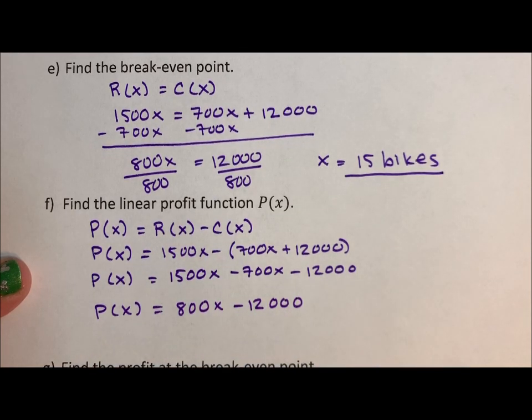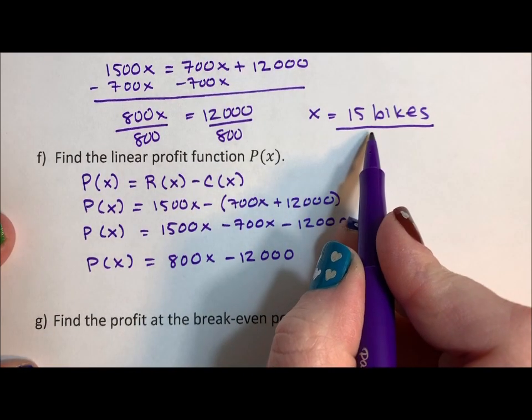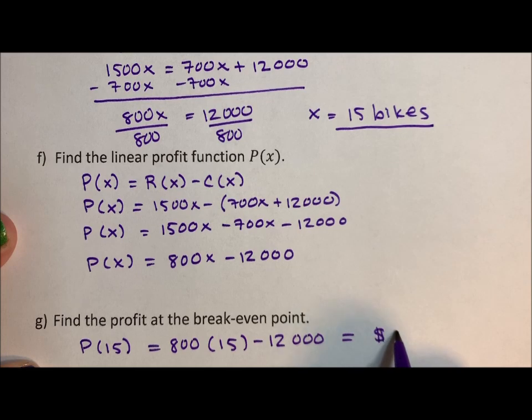And then find the profit at the break-even point. So the break-even point was our 15 bikes. So the profit at 15 bikes is 800 times 15 minus 12,000. And lo and behold, that's a profit of zero dollars.